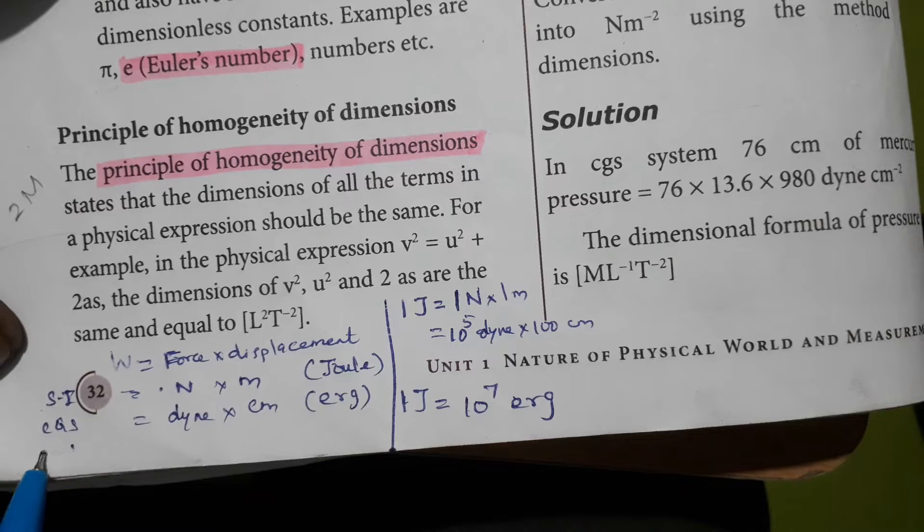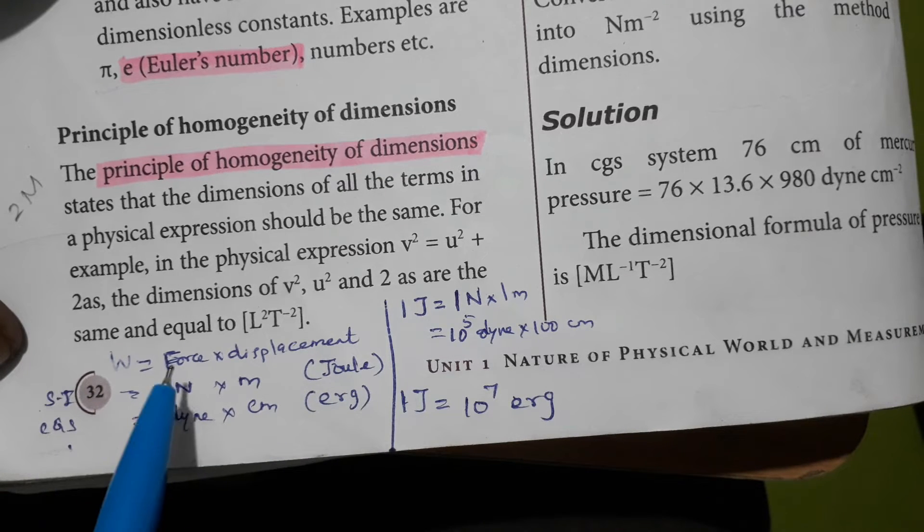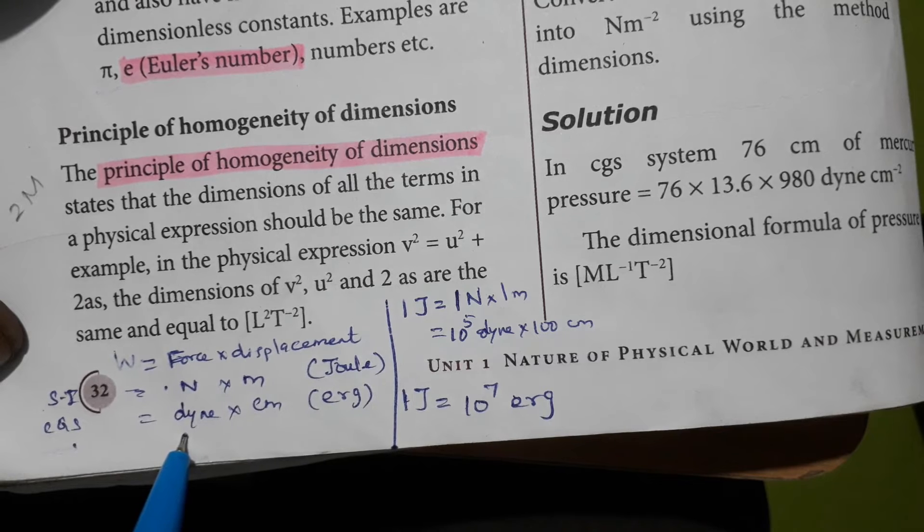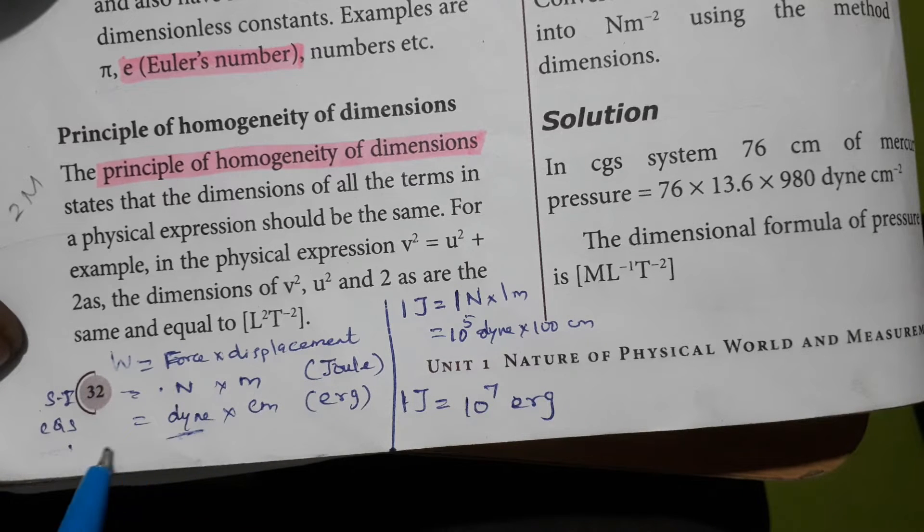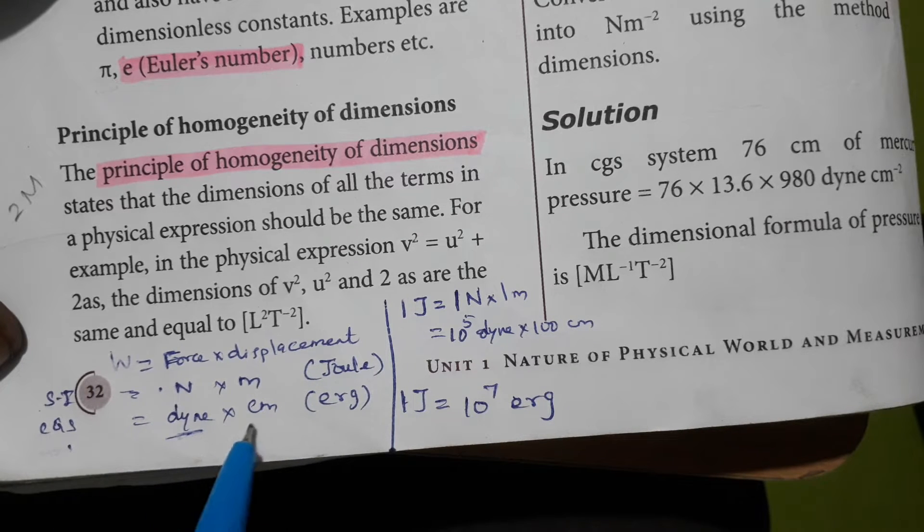In CGS units, centimeter gram second, we have the unit of force is dyne. In CGS system, the unit of force is dyne, and the unit of displacement is centimeter.